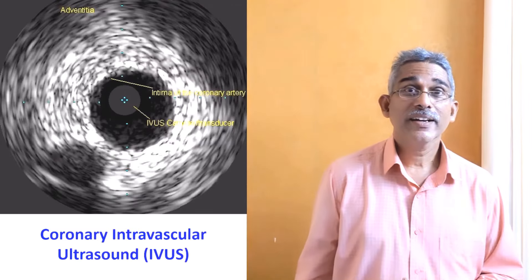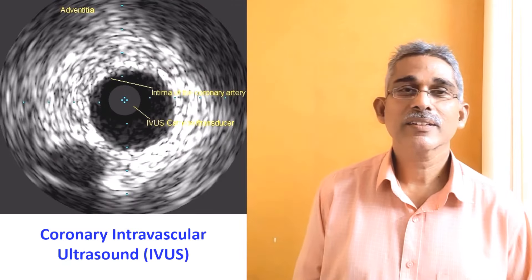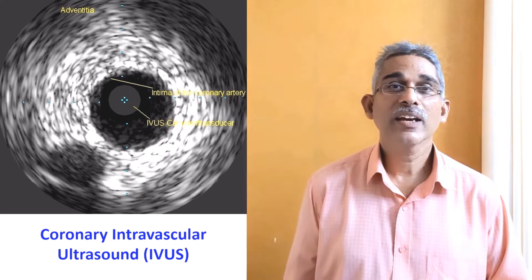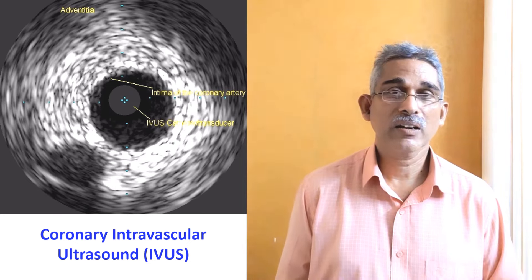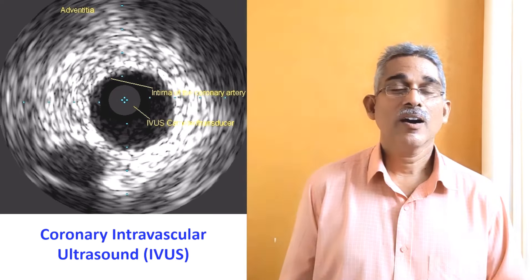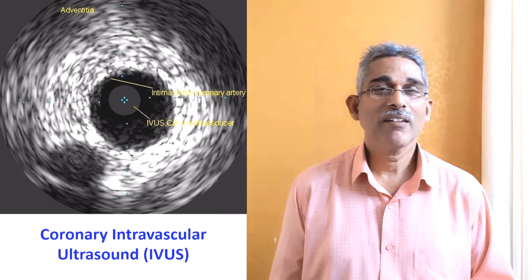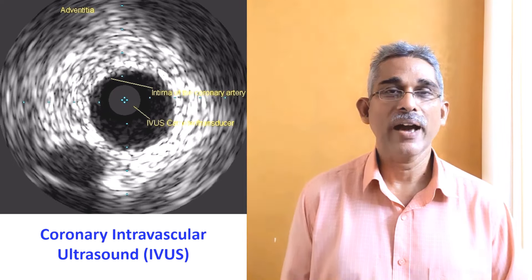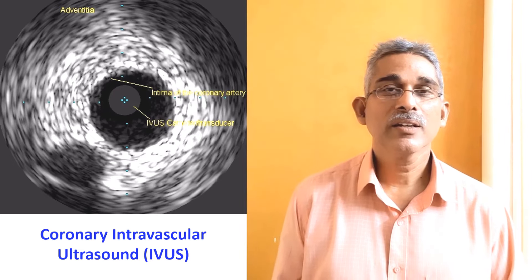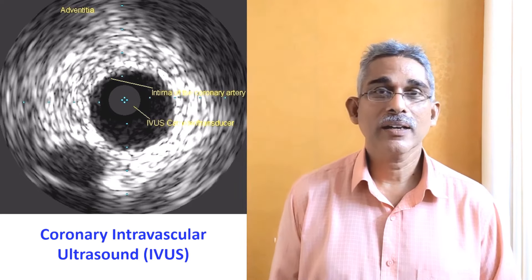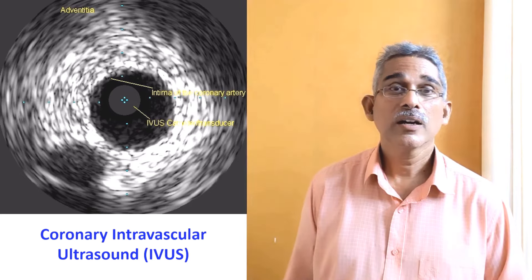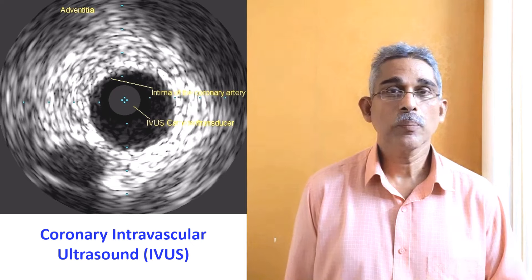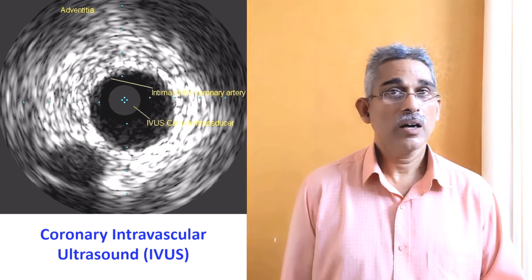A similar advancement is intracoronary ultrasound. Catheters the size of a coronary catheter can be introduced into the coronary artery to image the coronary plaque, arterial wall, stents, and dissection from within the coronary lumen — this is known as intravascular ultrasound or intracoronary ultrasound. A similar tool is the Doppler wire: a wire with a Doppler transducer introduced into the coronary artery can detect velocities and gradients across stenosis — known as intracoronary Doppler — and is used for estimation of fractional flow reserve.